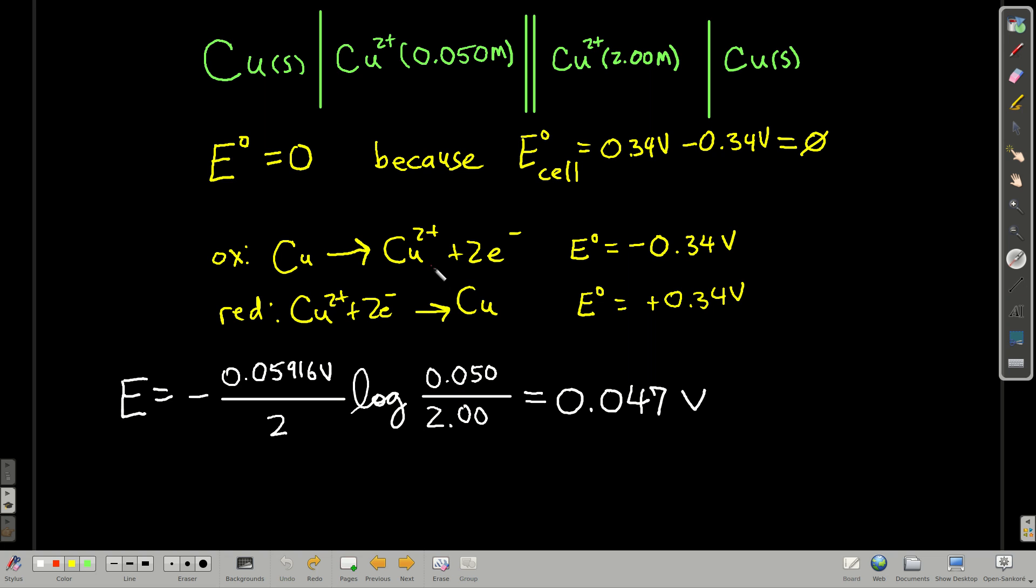Well, we know Q is the concentrations here. Two electrons are transferred. That's what this two here is. Plug these numbers in and you get 0.047 volts. So we can drive a voltage with the same ions, just different concentrations on both sides.